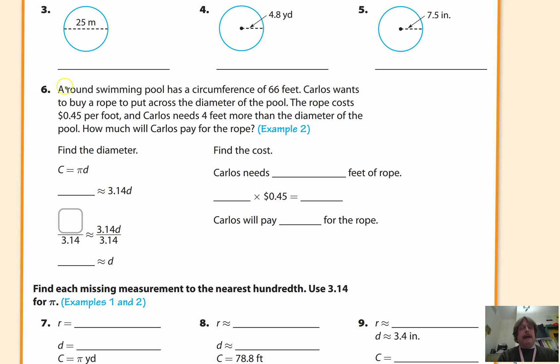In number 6, they give you a word problem. A round swimming pool has a circumference of 66 feet. So we highlight that. Carlos wants to buy a rope to put across the diameter of the pool. The rope costs $0.45 per foot, and Carlos needs 4 more feet than the diameter. How much will Carlos pay for the rope? So one of the little techniques I would do here is I would draw a circle. They're giving me my circumference. So I just put a line. My circumference all the way around is 66 feet. He wants to get a rope to go across the diameter.